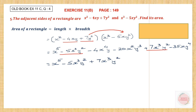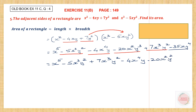Then we have minus 4x to the power of 4 y — we don't have another one like that. So we write minus 4x to the power of 4 y. Then we have minus 20x squared y cubed, which is the only one of its kind. And the last one is minus 35xy to the power of 4.